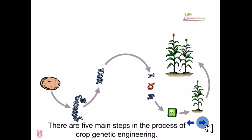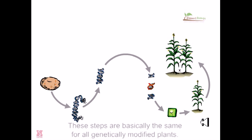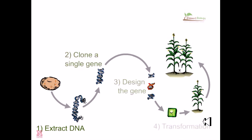There are five main steps in the process of crop genetic engineering. These steps are basically the same for all genetically modified plants. First step is the extraction of the DNA. Then the second step is the cloning of a single gene of interest. Third is designing the gene to be inserted inside the plant. Then the transformation of that gene inside the plant's cell. Then the backcross breeding several times to finally generate the plant of our desire.